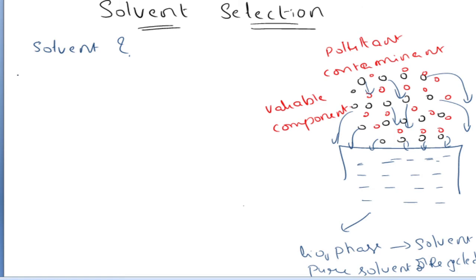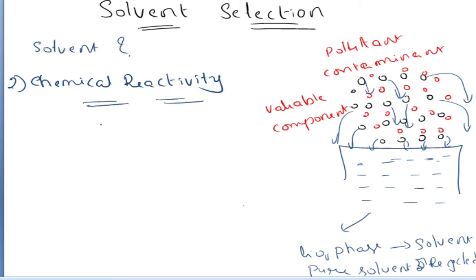The second criteria to be followed is chemical reactivity. Generally, if the solvent is reactive towards the solute, then the absorption is high because it has higher affinity and higher attractiveness, so it can absorb all the solute and form a new product. The question is whether we have to select a solvent with chemical reactivity or not.